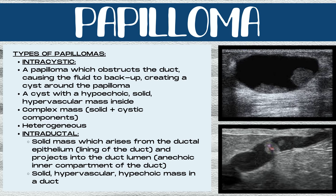You'll notice a cyst with a hypoechoic, solid, hypervascular mass inside. This can be a solitary solid mass or multiple solid masses, and you'll find them along the walls of the cyst. This is going to be a complex mass with both solid and cystic components, and it's going to be heterogeneous.